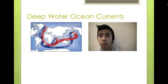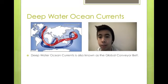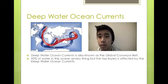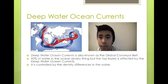Deep water ocean currents is also known as the global conveyor belt. 90% of water in the ocean is affected by the deep water ocean currents. It is controlled by the density differences in the water. Density tells how closely an object is compressed.